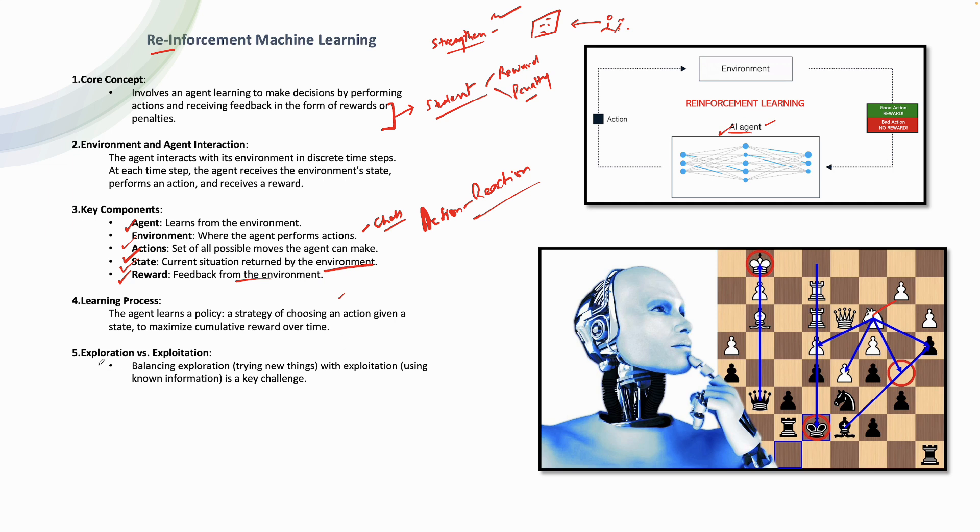There are two keywords, exploration and exploitation. Always remember, exploration means you are trying new things. Now in the game of chess, you want to explore it. You want to try different things, but you want to exploit as well. Exploit means whatever information you have, you want to make use of that. Or you can say, you want to leverage the existing amount of information that you have.